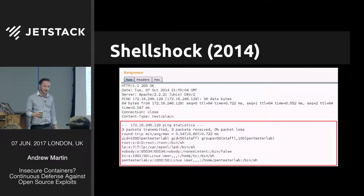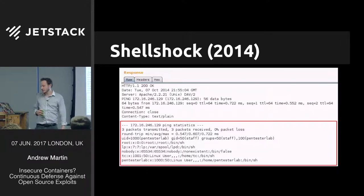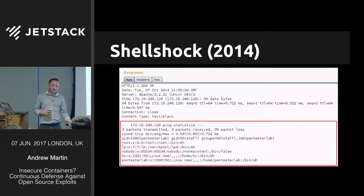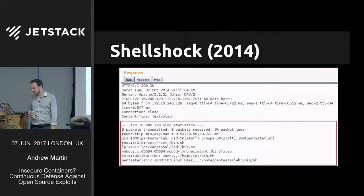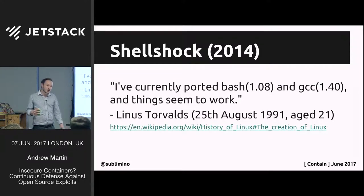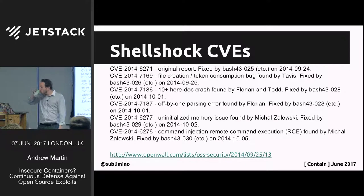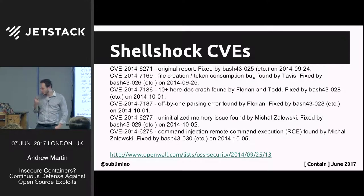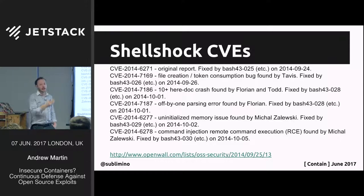You'd only see this in web server logs if you were logging headers, which is relatively abnormal. This bug was in the initial implementation of the function import/export spec in bash since 1989, from bash's original author — before HTTP existed, before the web was born, before Linux was even released. It would be incredible if this bug was not being exploited at some point in those 25 years. There are many CVEs for this bug, finally fixed by Florian Weimer, a Red Hat employee. Notably, the latter two bugs on the CVE list were both discovered using AFL.